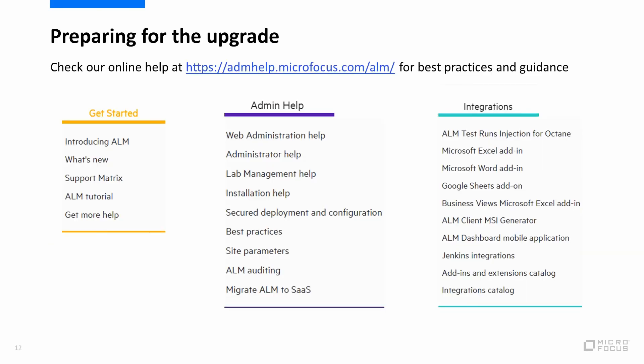In order to prepare for the upgrade, we recommend checking out our online help center. Under getting started, you can find information about new features of each version. You can also find the support matrix with information about the system requirements. Under admin help, you can find the installation and upgrade guides. It is also recommended to look at the best practice guide for upgrade tips. Under integrations, you can find the integration catalog to make sure all integrating products are compatible with the ALM version you are upgrading to.